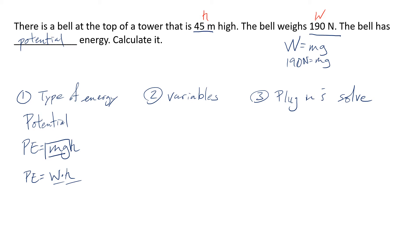So here I know that PE is going to equal to my weight which is 190 newtons times 45 meters. Let me grab my handy dandy calculator here. So that's just 190 times 45. So I got my potential energy is 8550 joules. Joules is our unit for energy. And look it's only two sig figs so it's actually going to be 8600 joules.